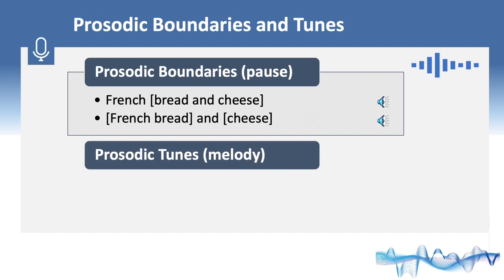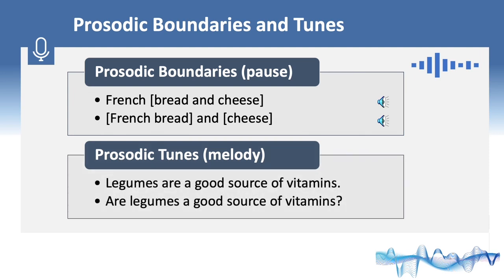Prosodic tunes show the intonational melody which is affected by pitch and rhythm. The example shows the different intonation meaning with the choice of pitch movement. For example, fall or rise. Legumes are a good source of vitamins. Are legumes a good source of vitamins?